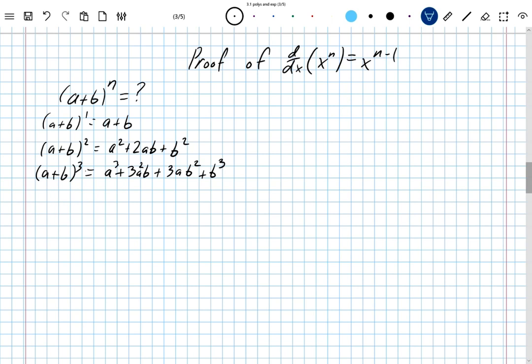And once you realize that this is going to describe all the possible combinations of a's and b's, the question becomes, what are these coefficients? How would I know what those coefficients are? And there's a nice pattern for this that I'm going to maybe remind you of.